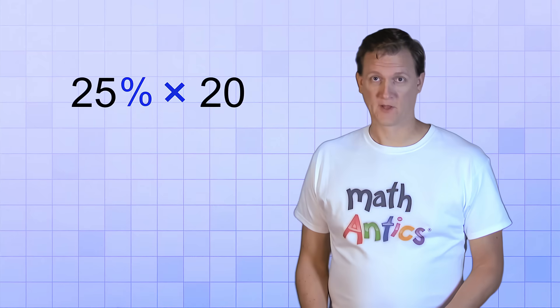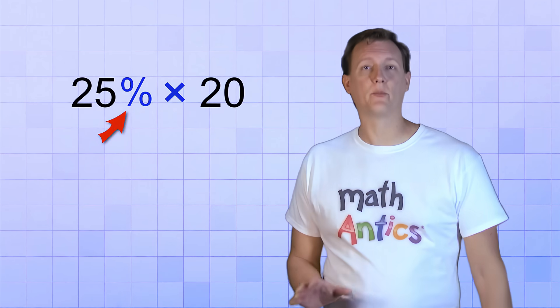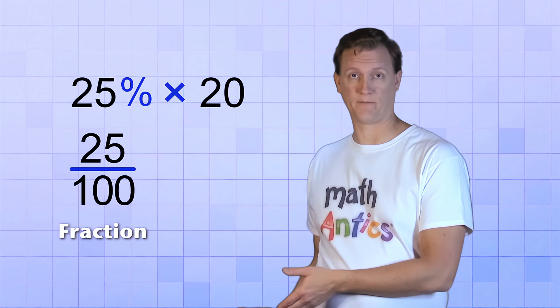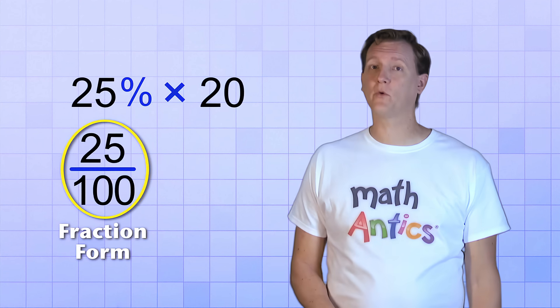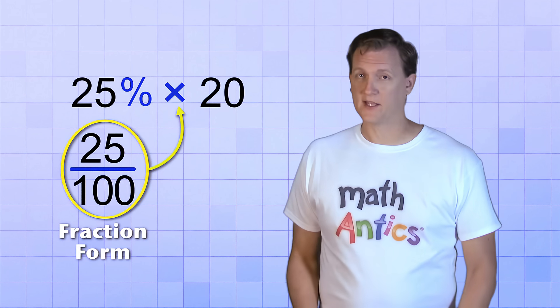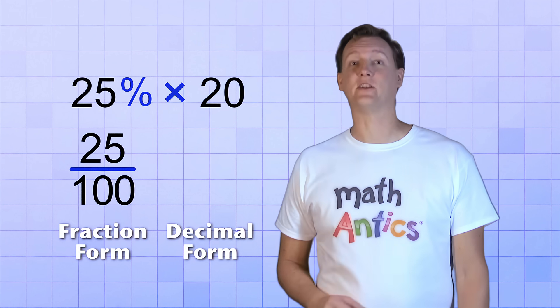Here's what we have to do instead. Remember that when you see a percent written like this with the percent sign, it's an abbreviation for a fraction. In this case, 25 over 100. So we need to use that fraction form when we multiply, since we're really multiplying by a fraction. Now some of you may also remember that percents have a decimal form. We'll get to that in just a minute.